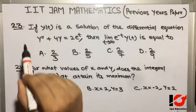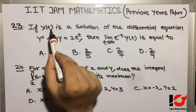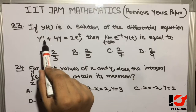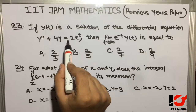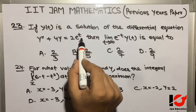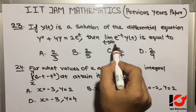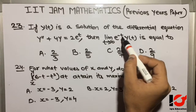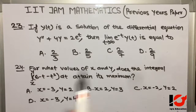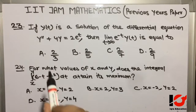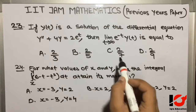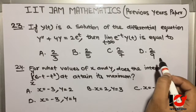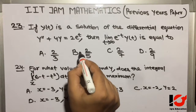Question 23: If y(t) is a solution of the differential equation y'' + 4y = 2e^t, then the limit as t approaches infinity of e^(-t) * y(t) equals: Option A: 2/3. Option B: 2/5. Option C: 2/7. Option D: 2/9. The required answer is Option B — 2/5.